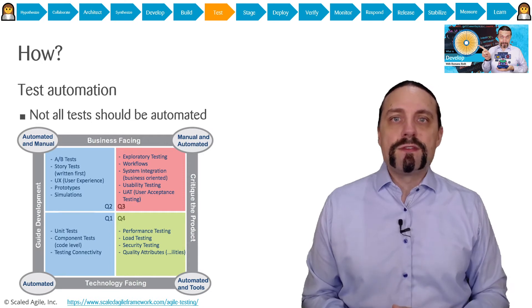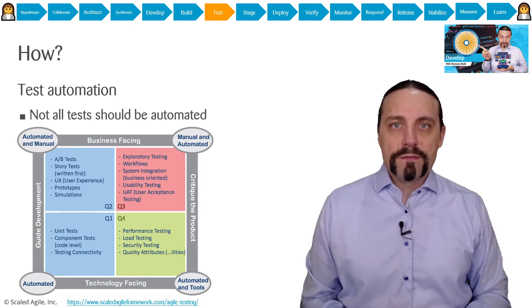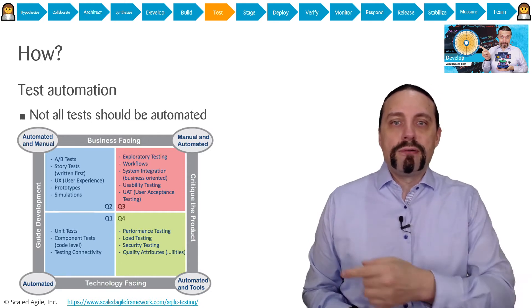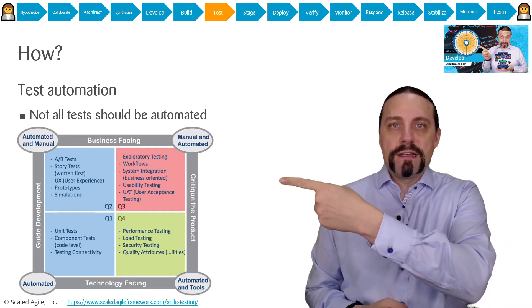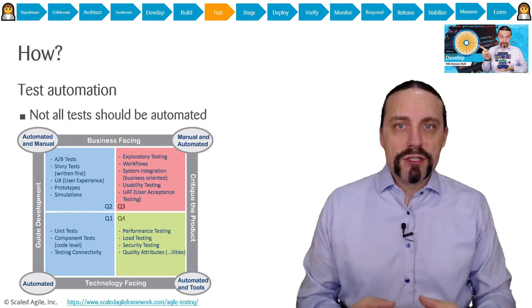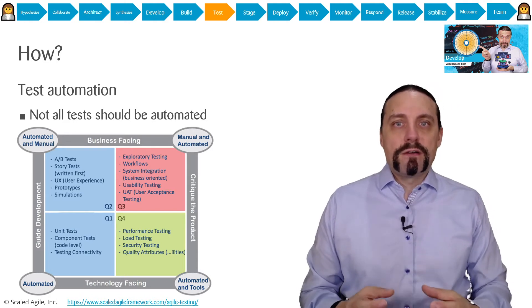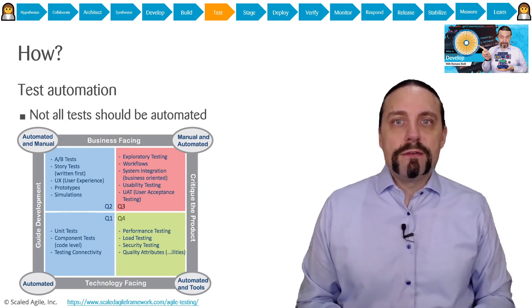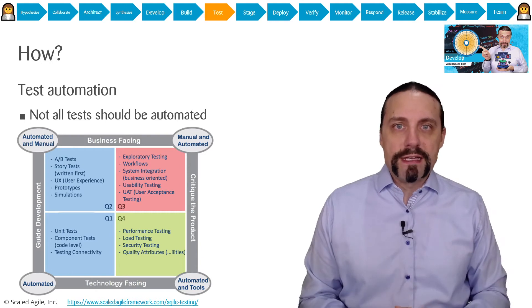In this area we use test driven development. When we move up in the agile test matrix we go into area Q2 where we execute all of the functional tests.